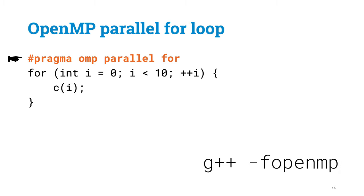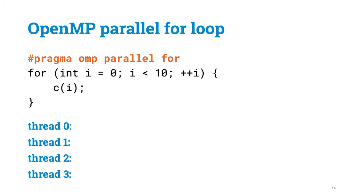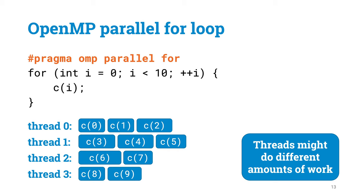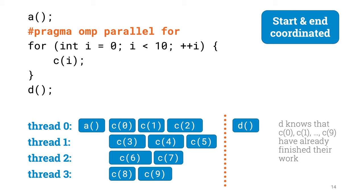No other changes. Compile the code, run it with a computer with four CPU cores, and see what happens. All of a sudden we have got four threads of execution, one per CPU core, and the loop is split automatically among the four threads. With very little coding effort we got almost a factor of 4 speedup. There is no synchronization between the threads while they are doing their own work — the first thread will start C(1) as soon as C(0) is done, and the threads have no idea what the other threads are doing. This is what makes OpenMP fast: you only coordinate at the beginning and at the end of a loop. However, the beginning and the end are synchronized, so function D can safely assume that all the work in the loop is done, just like in the sequential version.